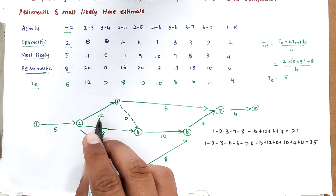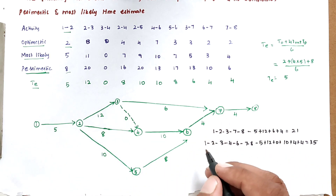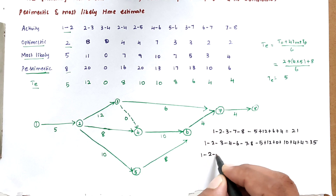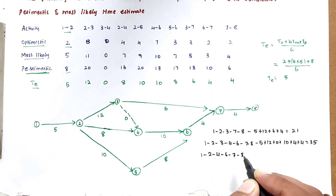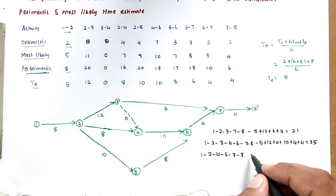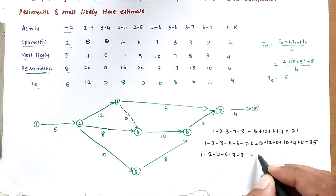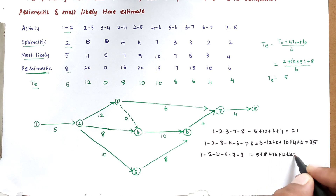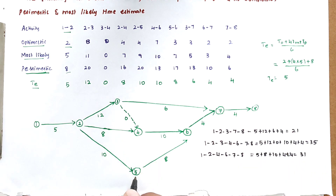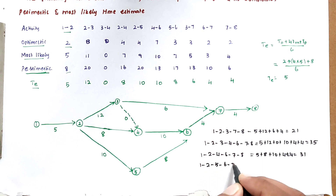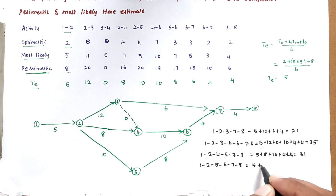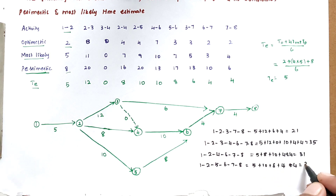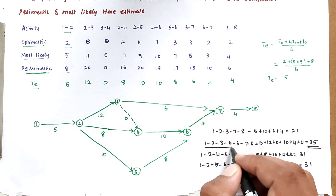Path 3: 1-2-4-6-7-8, with duration 5 + 8 + 10 + 4 + 4 = 31. Path 4: 1-2-5-6-7-8, with duration 5 + 10 + 8 + 4 = 27. Wait — correcting path 4 total: 5 + 10 + 8 + 4 + 4 = 31. The highest value among all paths is 35.